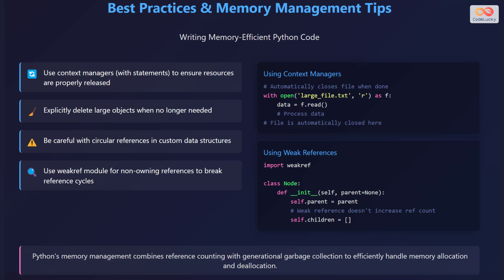A non-owning reference means the reference count is not increased. For example, the first code block on this slide automatically closes a file after reading its contents using the with statement. Whereas the second code block uses the weak ref module to create a weak reference, preventing the reference count from increasing and breaking potential cycles.